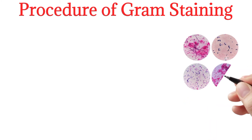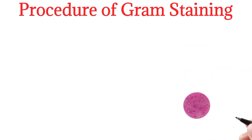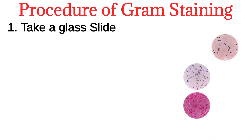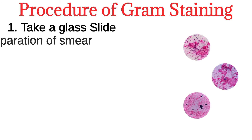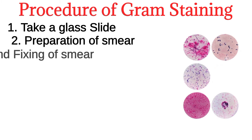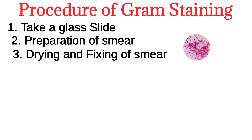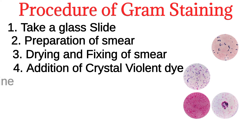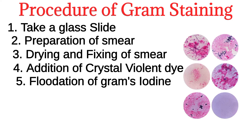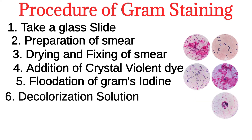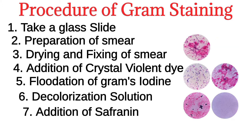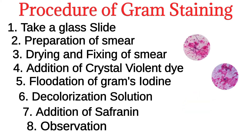Procedure of Gram staining. The steps are: take a glass slide, preparation of smear, drying and fixing of smear, addition of crystal violet dye, application of Gram's iodine, decolorization solution, addition of safranine, and then observation.